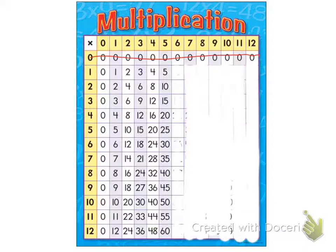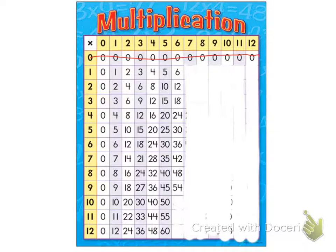What about the sixes? It goes six, twelve, eighteen, twenty-four, thirty, thirty-six, forty-two, forty-eight, fifty-four, sixty, seventy-two.